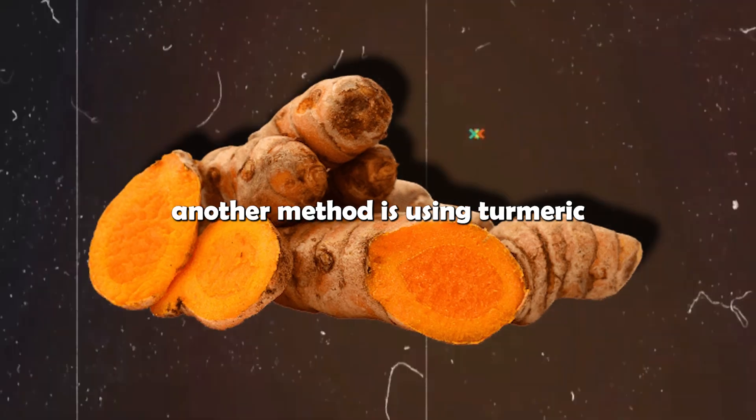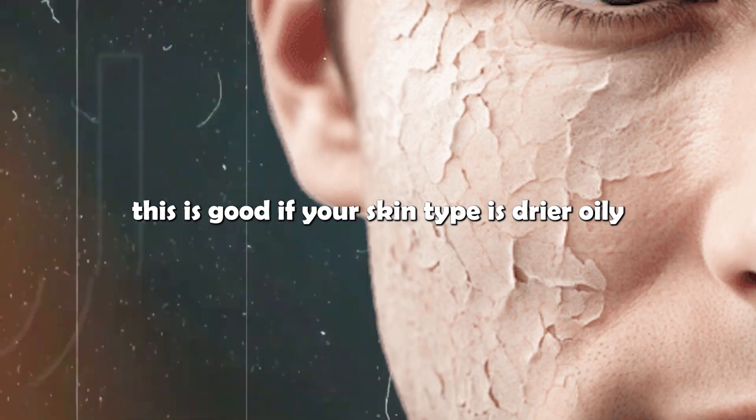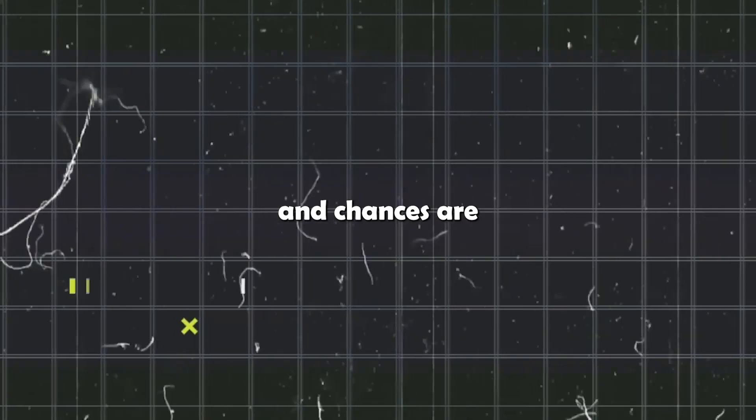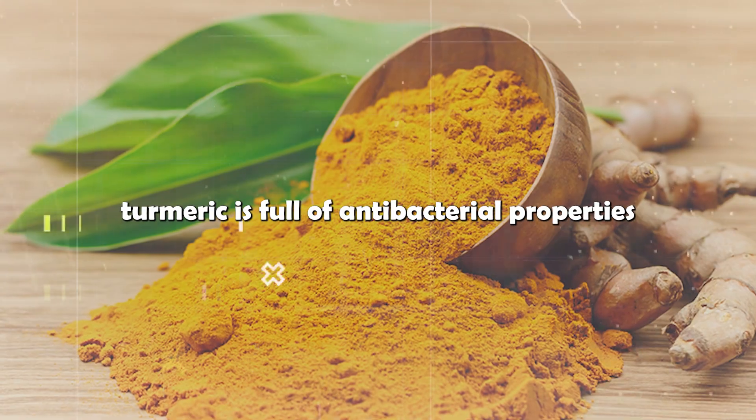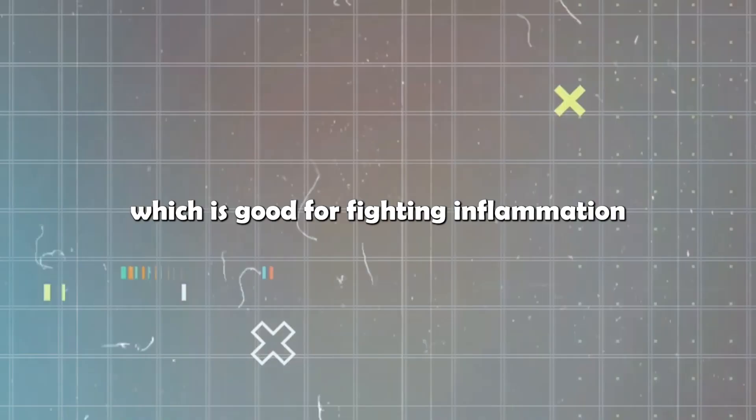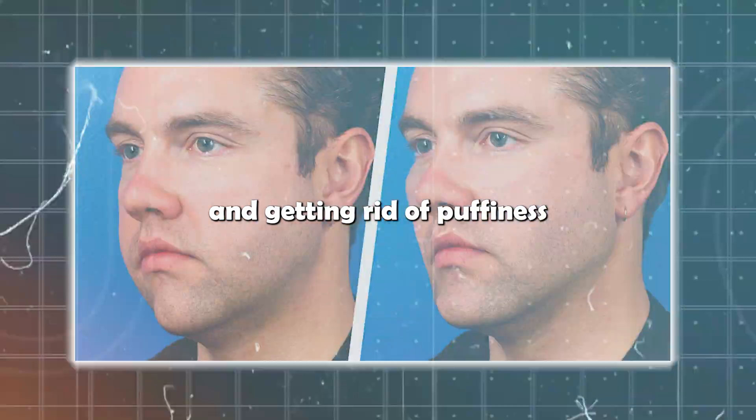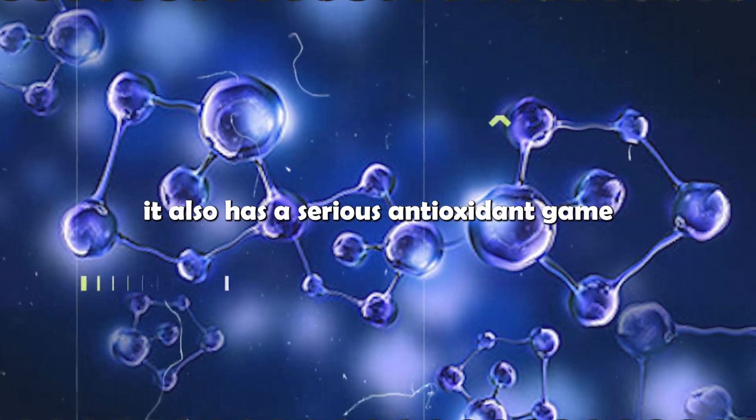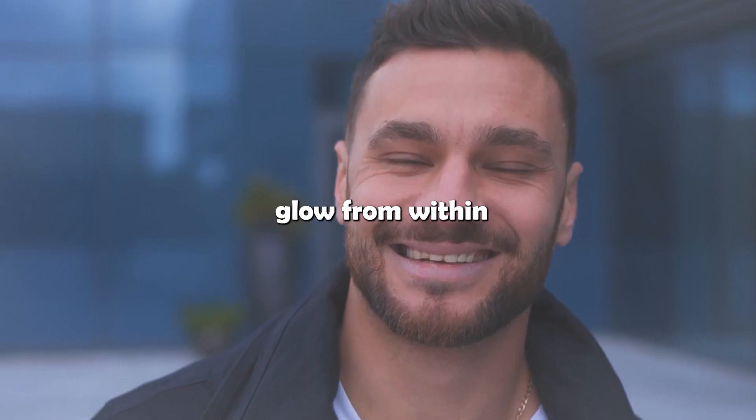Another method is using turmeric. This is good if your skin type is dry or oily. Turmeric spice is really good for your skin, and chances are you probably already have this in your kitchen. Turmeric is full of antibacterial properties and is loaded with curcumin, which is good for fighting inflammation and getting rid of puffiness. Besides that, it also has a serious antioxidant game, which can make your skin glow from within.